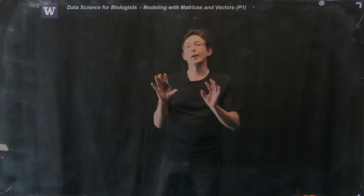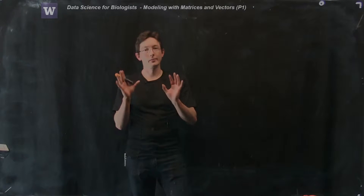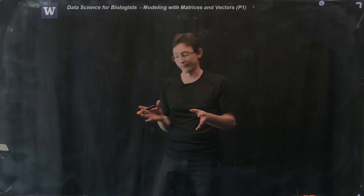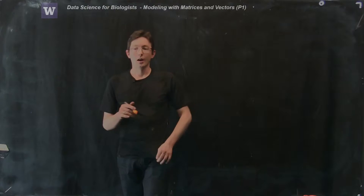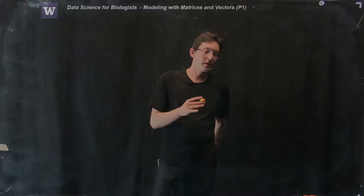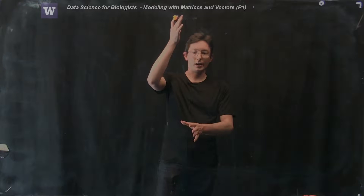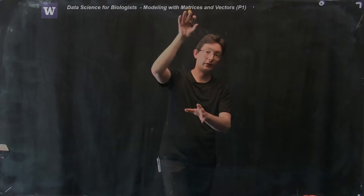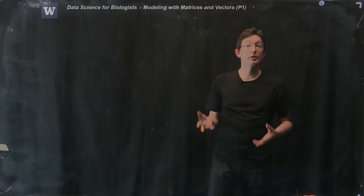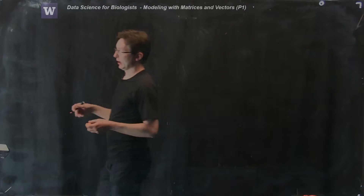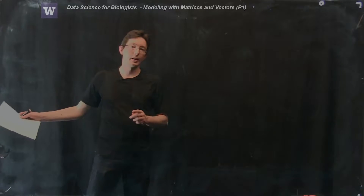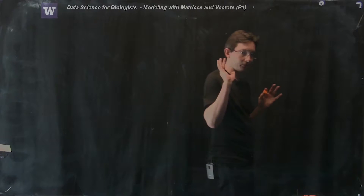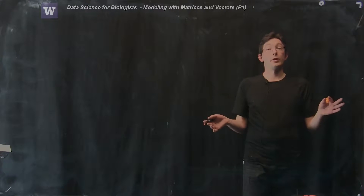Now we're going to start talking about how you can model real-world systems with matrices and vectors. Matrices and vectors are really great tools for storing data and storing information about features of a system. For the example we're going to talk about right now, we're going to develop a simple weather model.